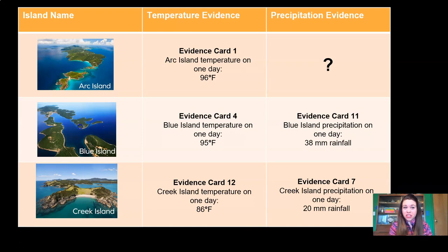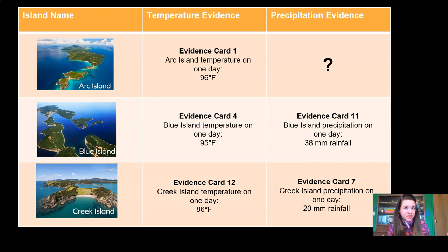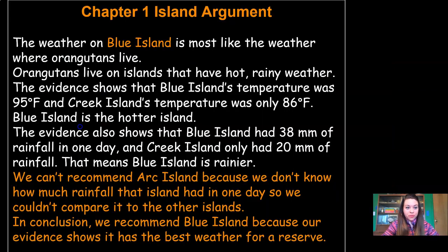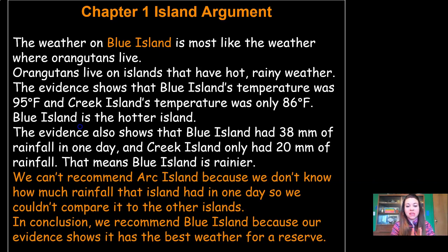We also need to prove to the Wildlife Protection Organization that we reviewed all three islands and did our best to compare. So we need an explanation for why we didn't select Arc Island — we didn't have enough evidence because we didn't have a precipitation reading for Arc Island. We can't recommend Arc Island because we don't know how much rainfall that island had in one day, so we couldn't compare it to the other islands. In conclusion, we recommend Blue Island because our evidence shows it has the best weather for a reserve.